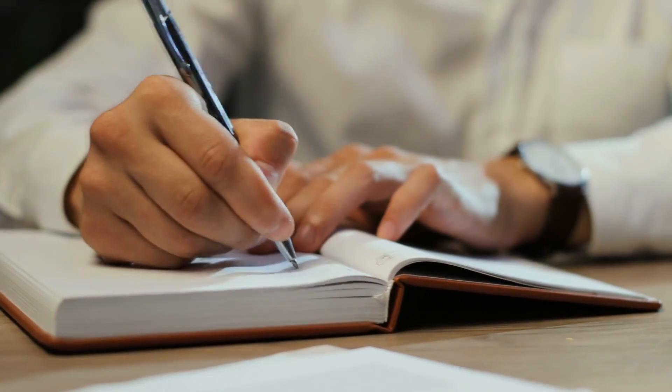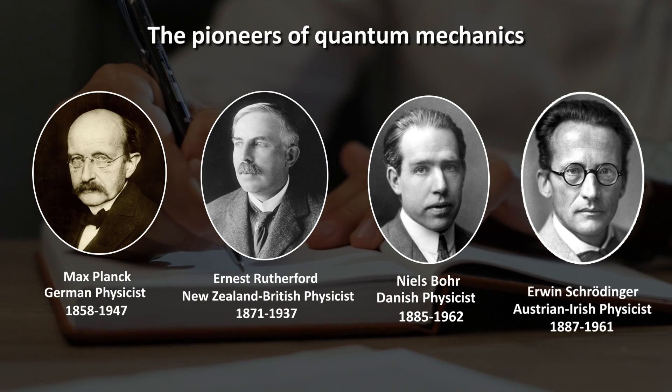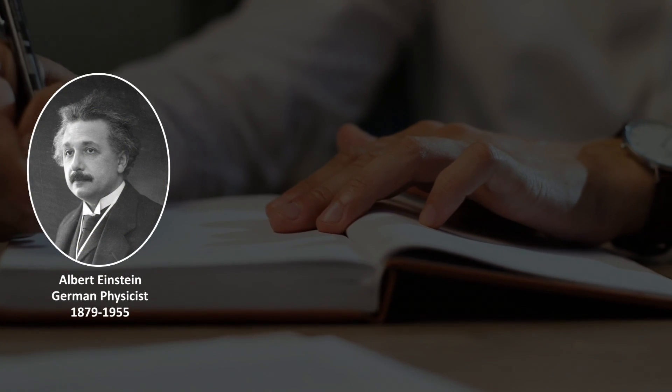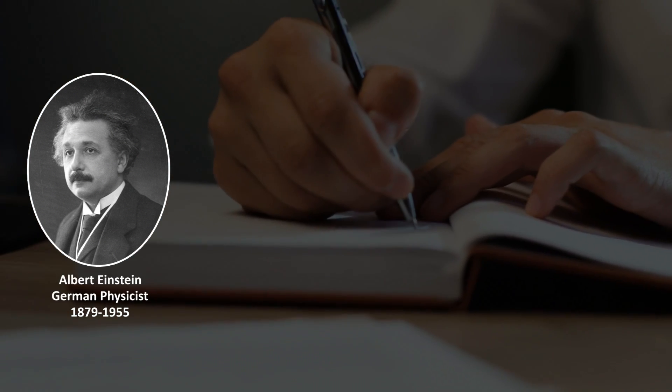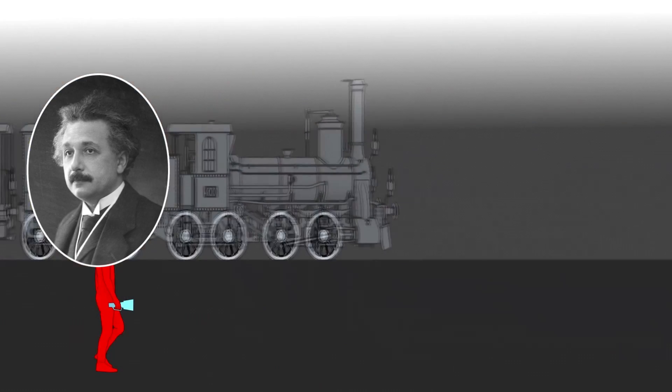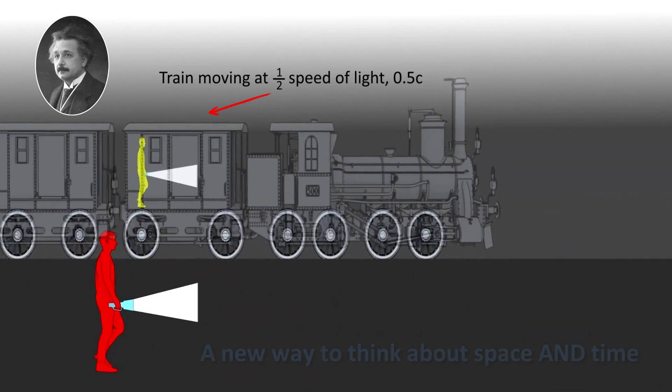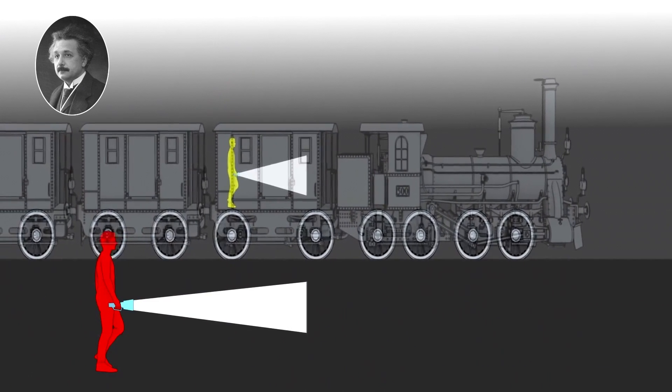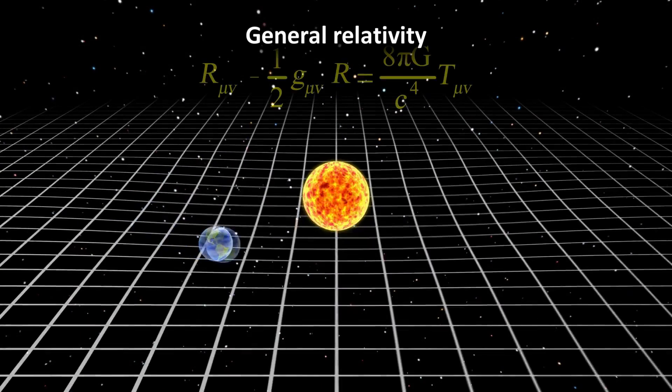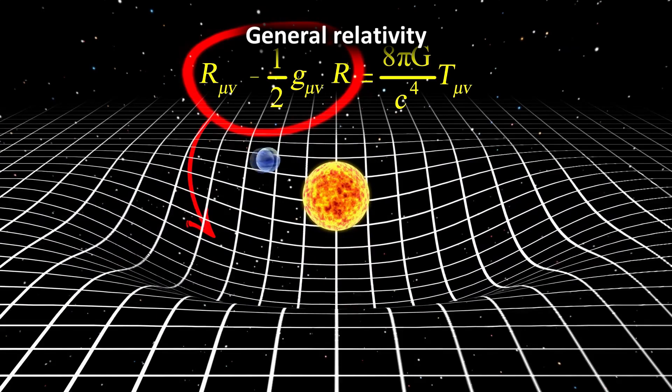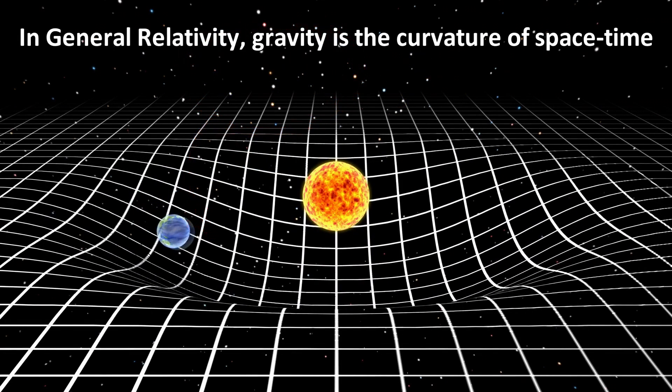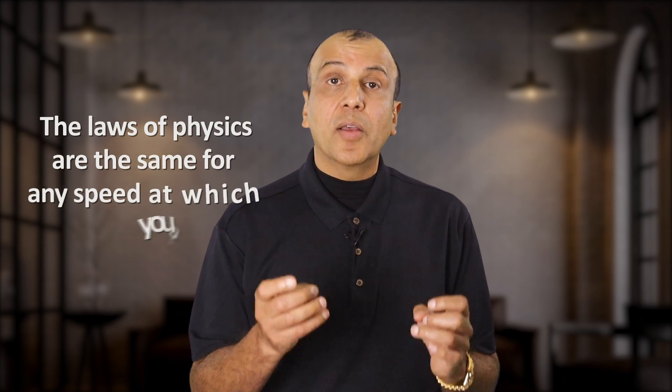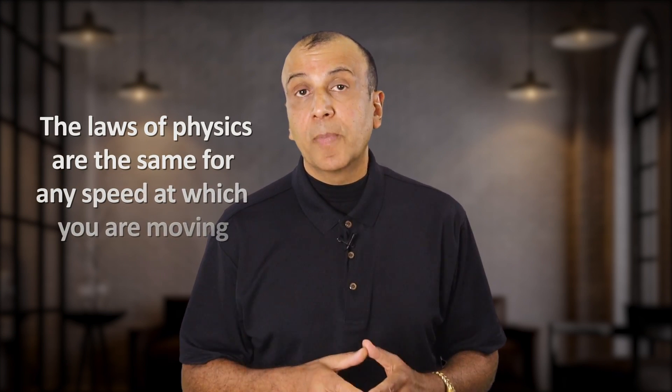The problem is that around the same time as Max Planck and other pioneers of quantum mechanics were rewriting physics books, a certain scientist by the name of Albert Einstein also decided to join in the destruction of the classical world. His theory of special relativity, and later general relativity, also completely changed the way we think of the world, but in a slightly different way. You can watch my videos on special and general relativity, but for this discussion, the problem related to quantum mechanics comes down to the fact that Einstein's brilliant new theory contained a statement along the lines of, the laws of physics are the same for any speed at which you are moving. Thus, no matter if you move at 10, 100, or 1 million kilometers per hour, the physics you experience should be the same.